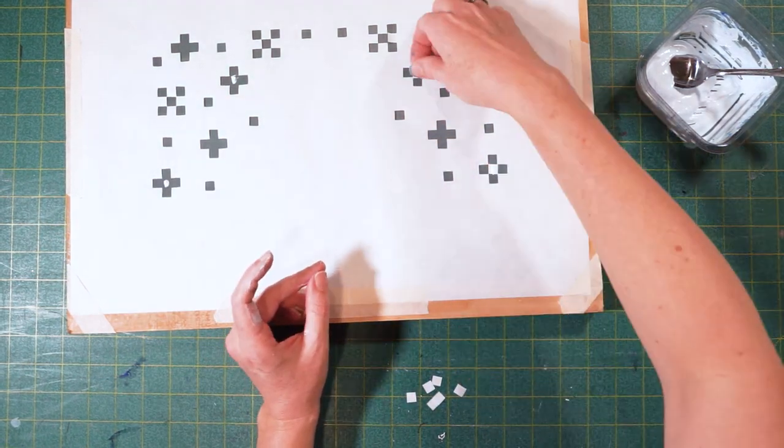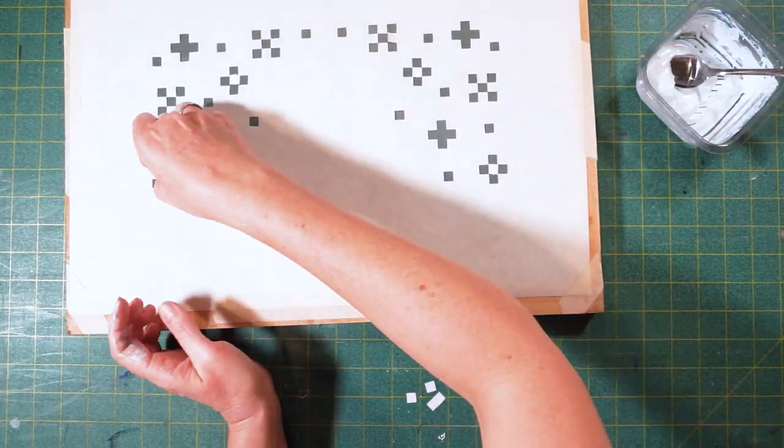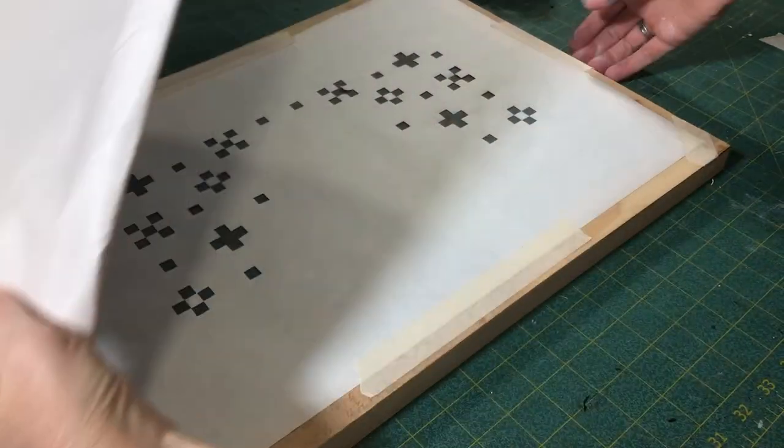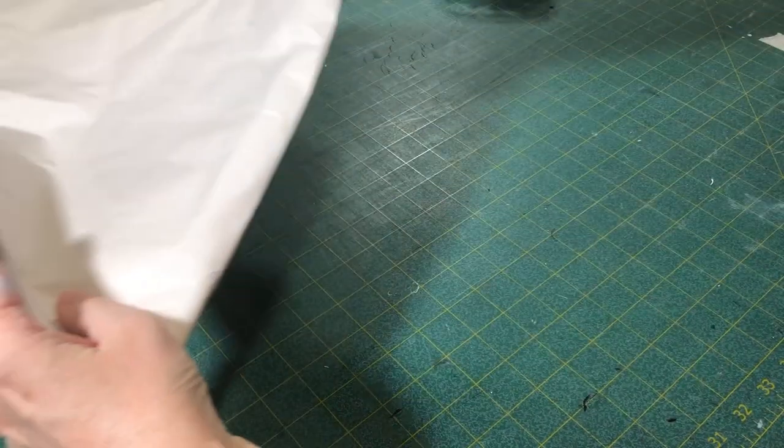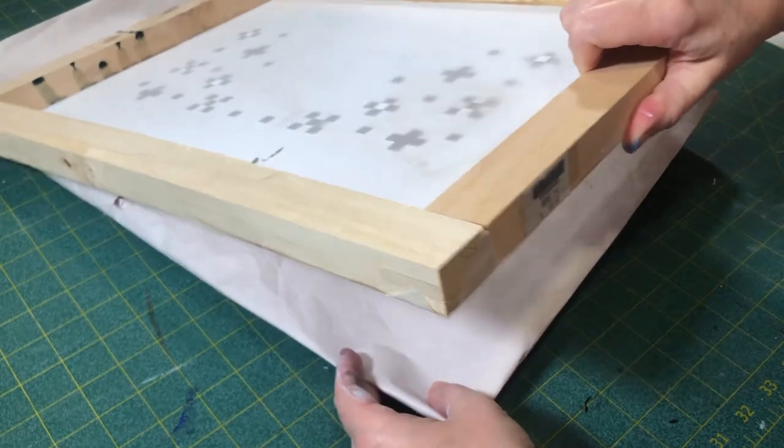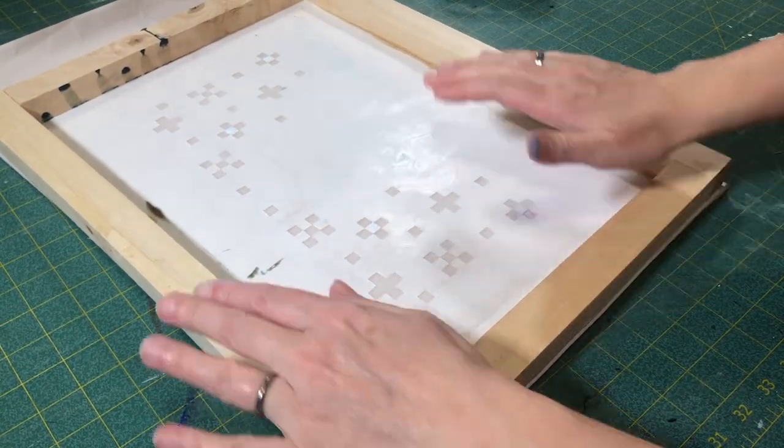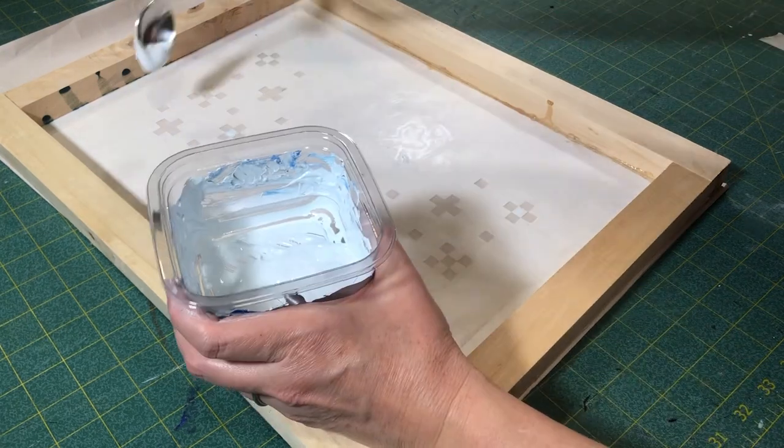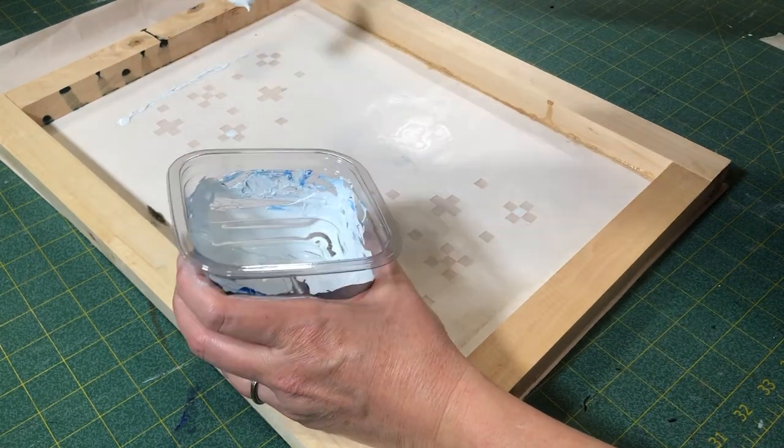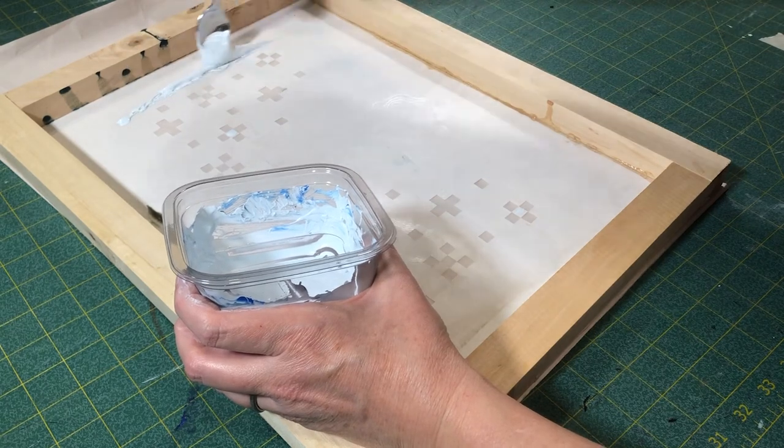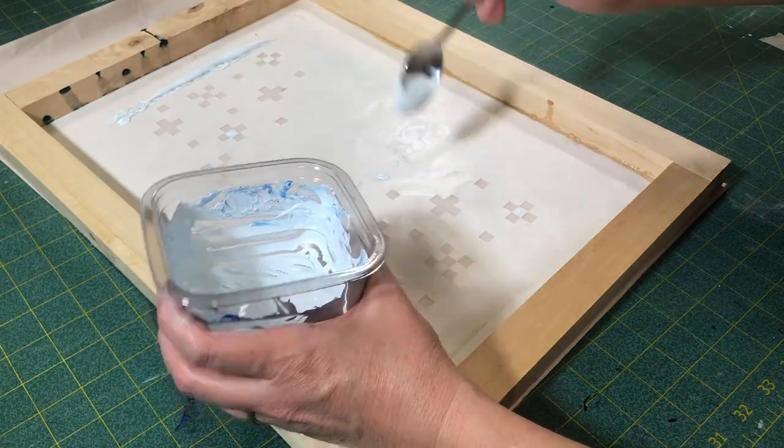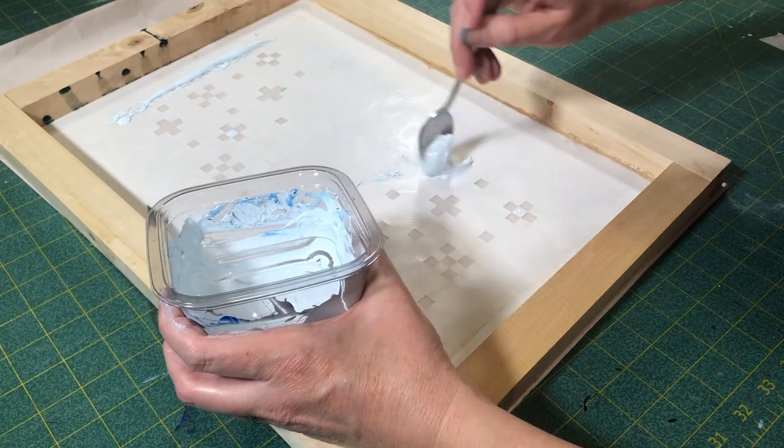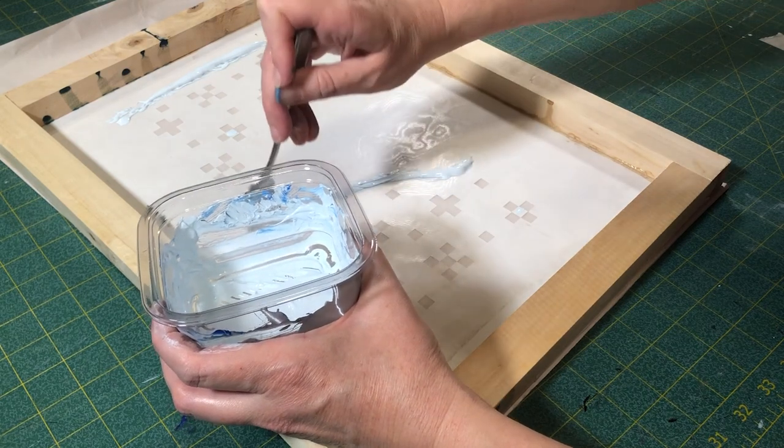I'm going to fiddle faddle around a little bit. This is trash paper so that we can get the screen nice and locked down. Now, what I don't want to do is waste my color, but I do have to use my color to lock it down. Put some there and then I'm going to put some more there.